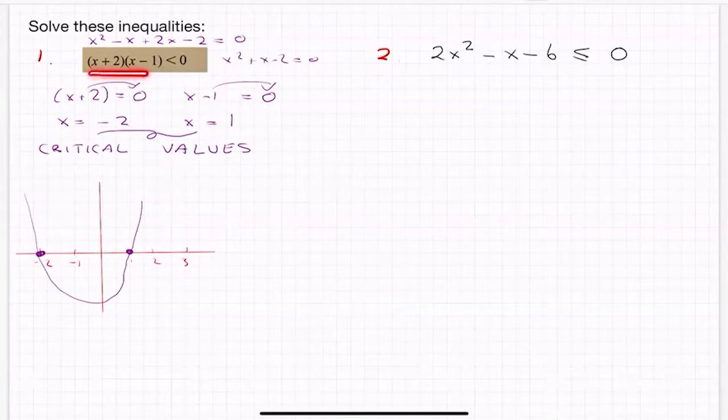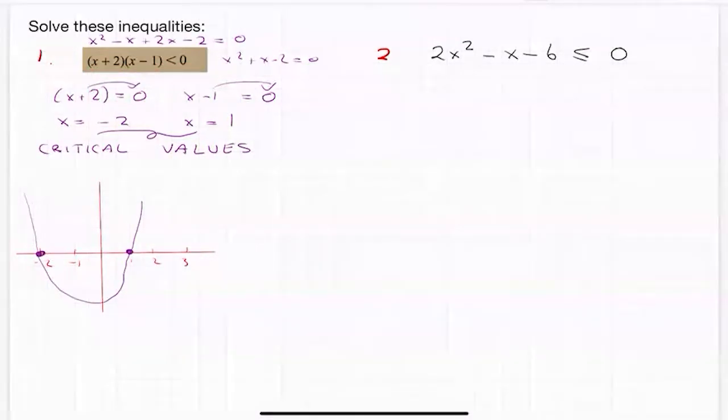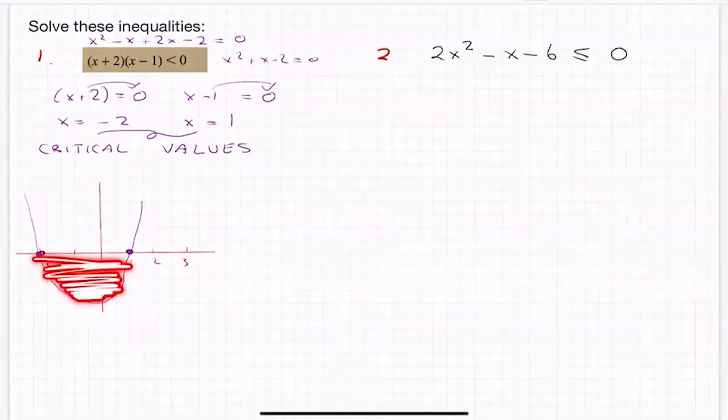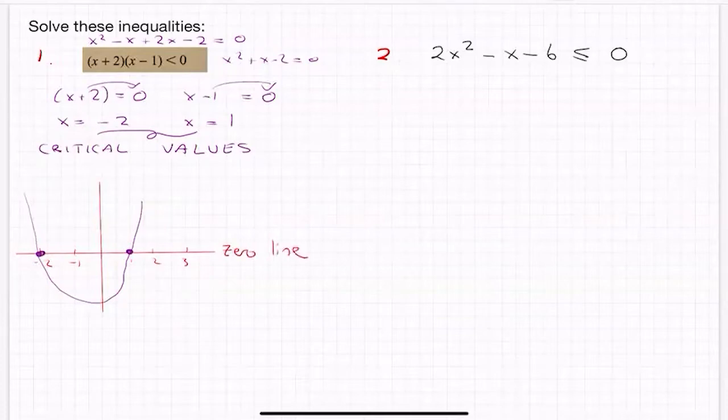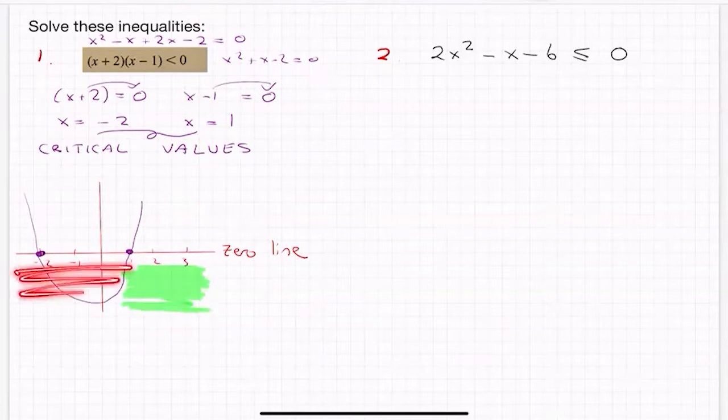So what does that mean? Well, that means that I know my graph roughly goes like that. Don't know how far it comes down here, or how steep it goes up there. I also don't care for inequality signs. And this is the reason why. So this question asks you, where is this function less than zero? So there's two places it could be less than zero, it could be down here. Well, that's the only place that's less than zero. And this is what we call above zero.